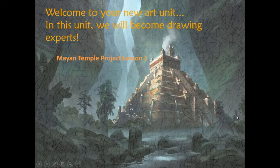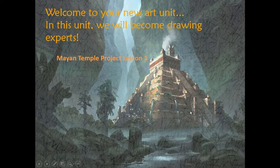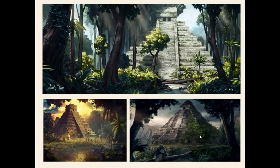We're going to learn all about perspective. In this unit we're going to make a composition which includes in the middle of it a Mayan temple. Here's an example - we're going to draw the Mayan temple and around it is going to be the jungle, very atmospheric, very maybe a little bit scary. That's probably going to take us about four lessons.